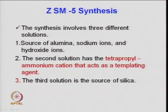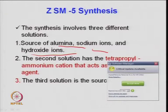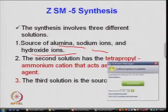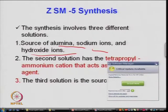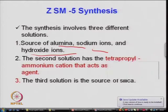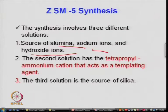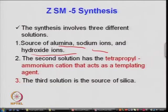A typical recipe for ZSM-5: the source of silica, alumina, sodium ions, and hydroxide ions are required as raw materials. The second solution is your templating agent - isopropyl ammonium cation is used as templating agent. The third solution is the source of silica. The tetrapropyl ammonium cation can be any organic group. Isopropyl is one option; there can be other templating agents also - EDTA can be used, just like in a sol-gel process, or alcohol groups can be taken with ammonium cations.